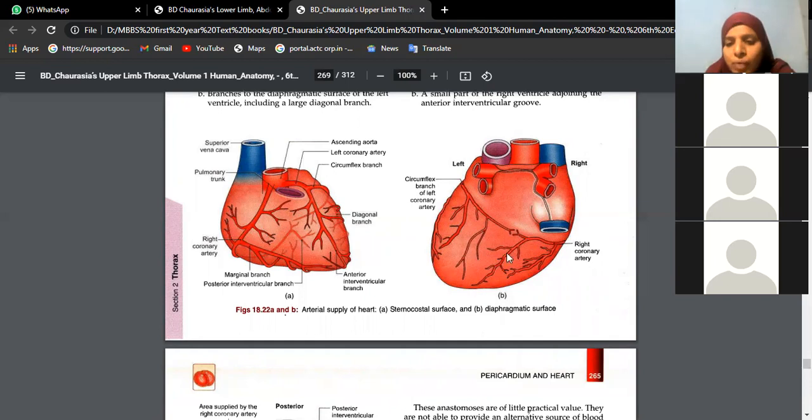It is finally terminating into the posterior interventricular groove, continuing as posterior interventricular artery. Now let us see the various branches. The first branch it gives is to the pacemaker of heart, that is SA node. Then because it is right coronary artery, obviously maximum branches are given to the right side of the heart, that is right atrium and part of right ventricle, and a part of left ventricle is supplied.